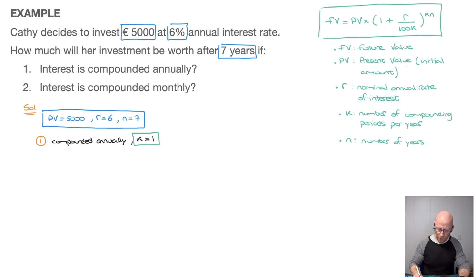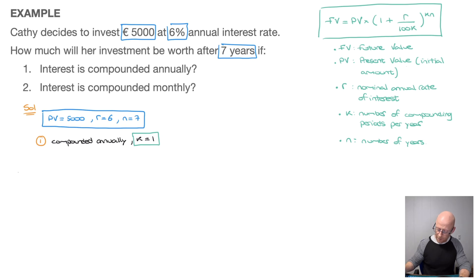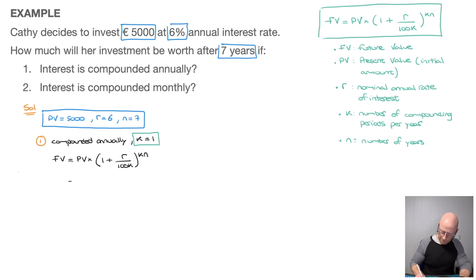Now we have the present value, interest rate, number of years, and number of compounding periods. In an exam, I'd suggest always copying the formula first, then substituting the values. So FV equals PV times (1 plus r over 100 times k) raised to the power of kn. Replacing PV with 5,000, R with 6, K with 1, and N with 7, this becomes 5,000 times (1 plus 6 over 100 times 1) raised to the power of 1 times 7.